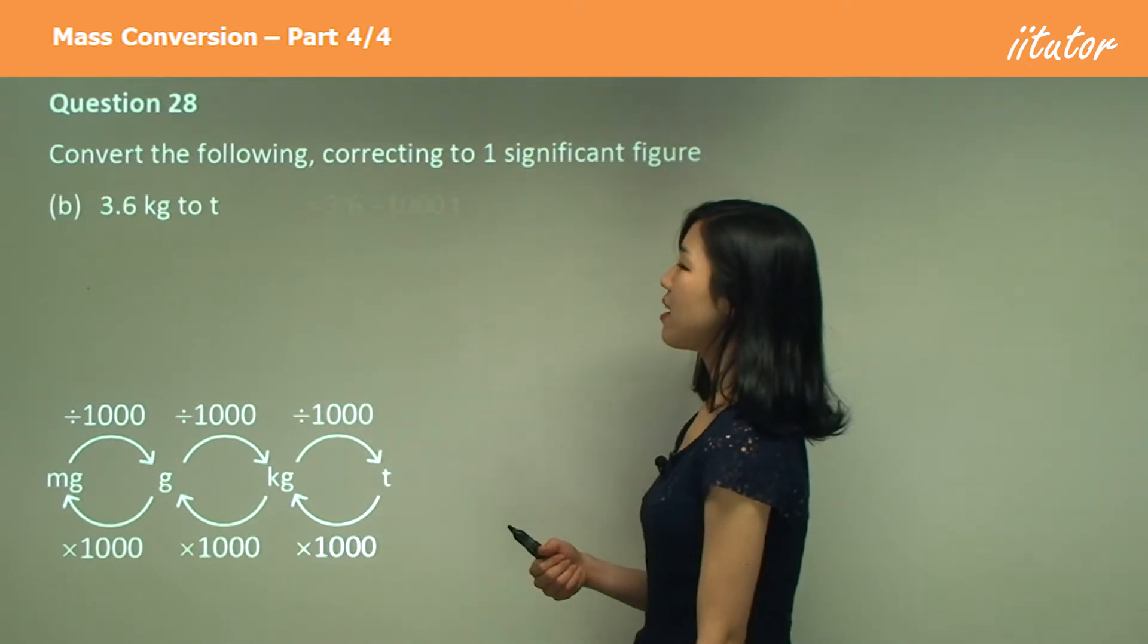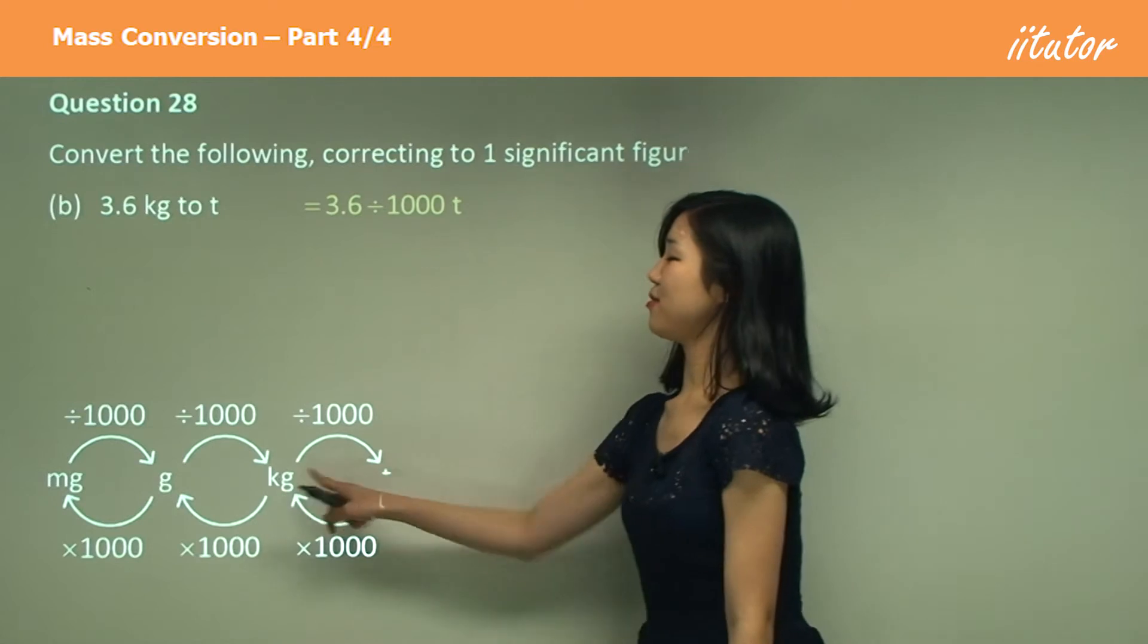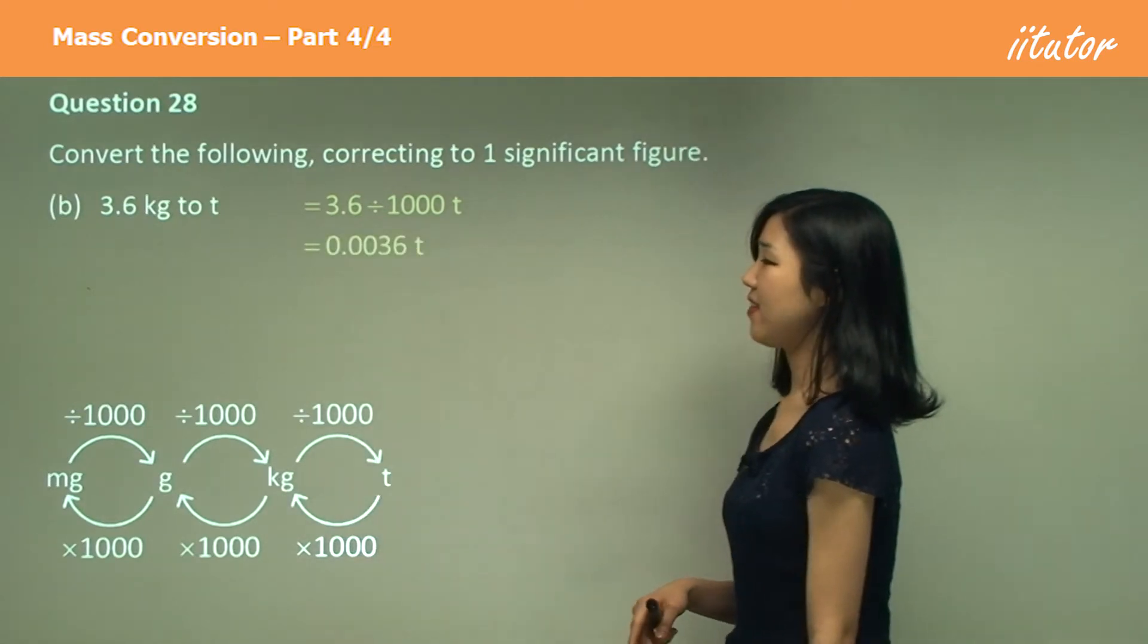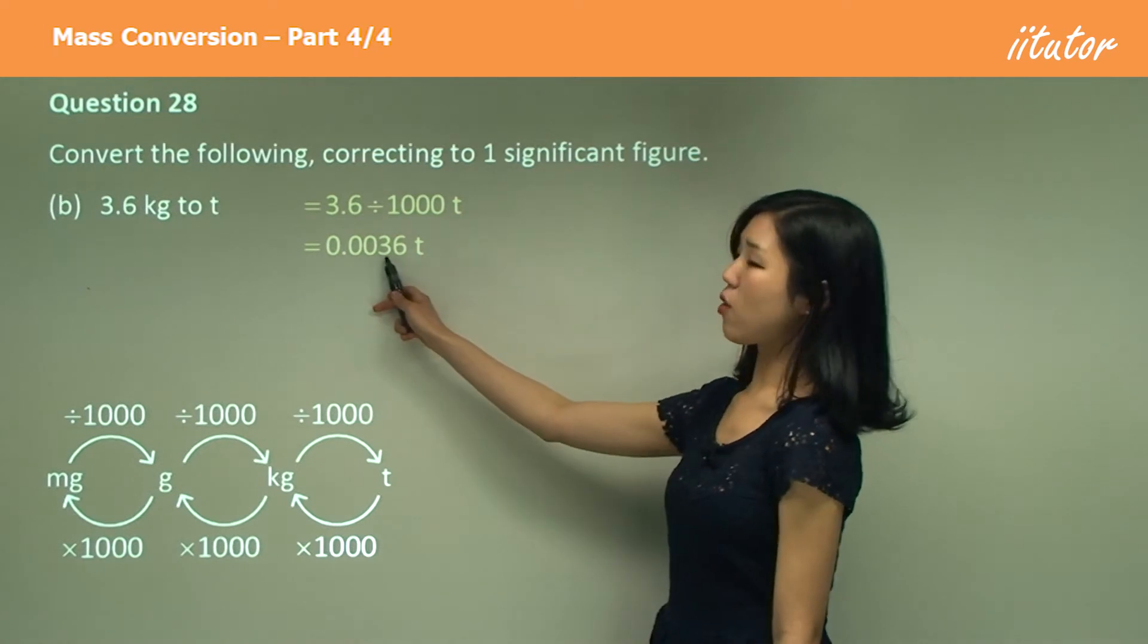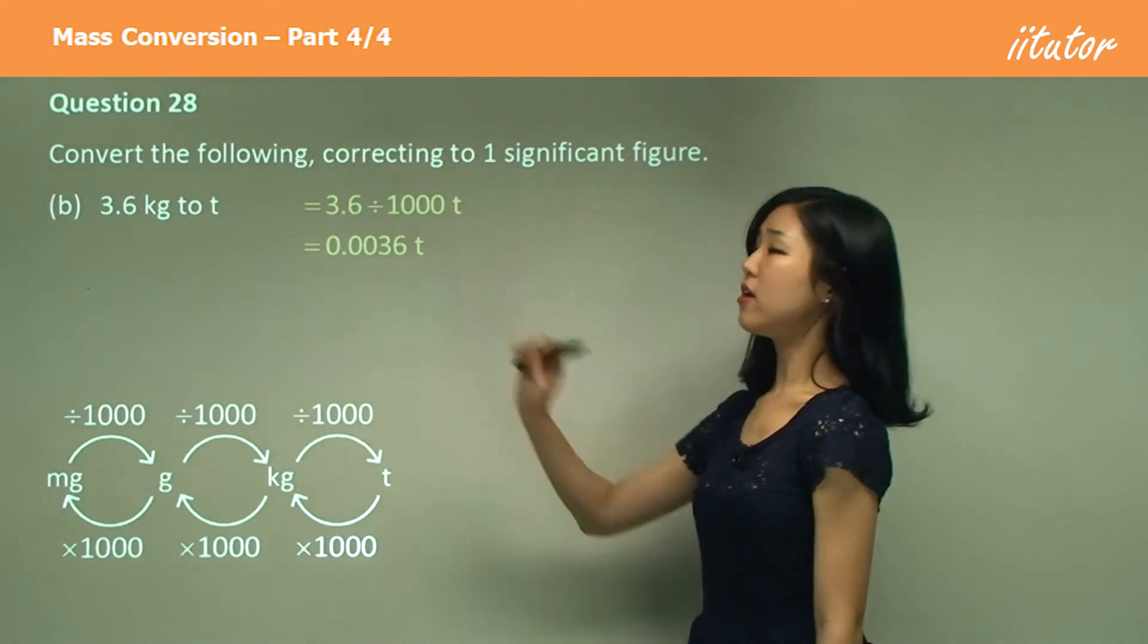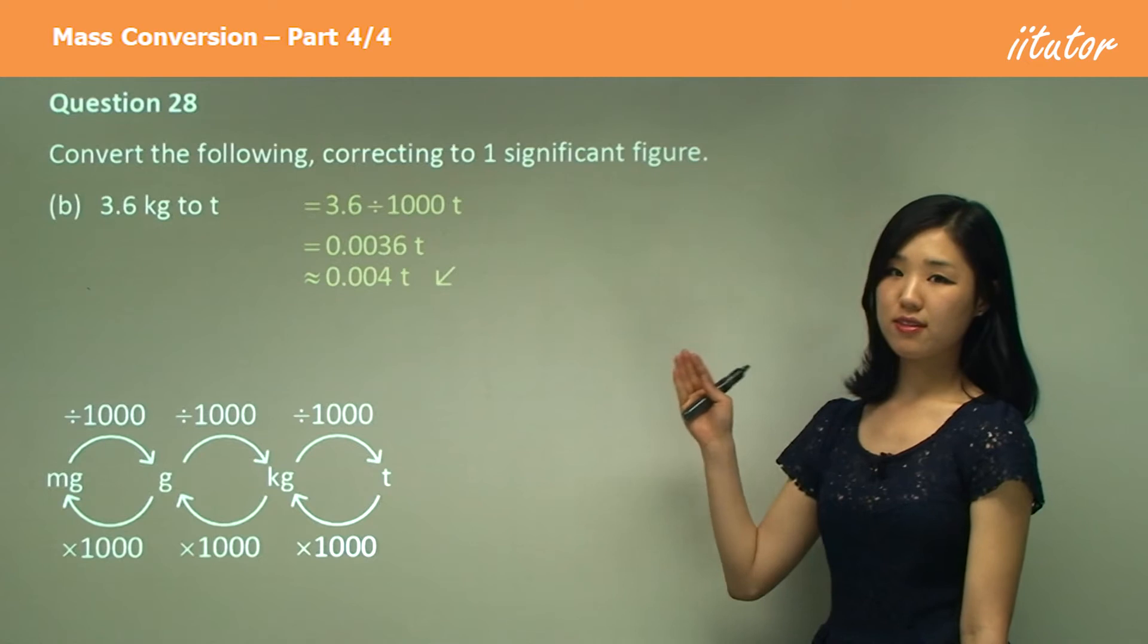And kilograms to tons again, divide by thousands, small to large, we divide like that. So we need to put in one significant figure, so always the first non-zero. So it's going to be four because six is greater than five.